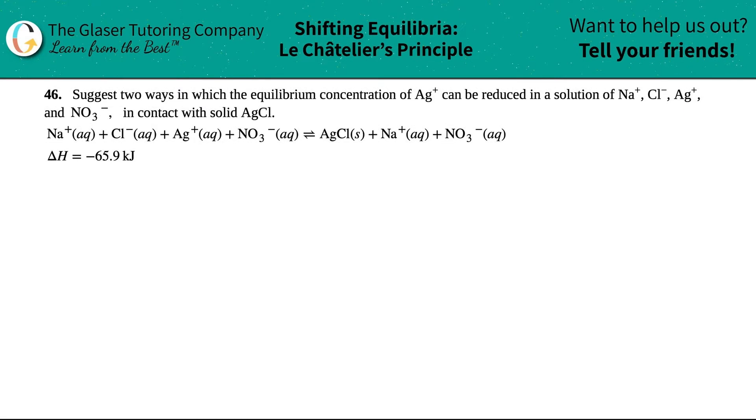Number 46. Suggest two ways in which the equilibrium concentration of Ag plus can be reduced in a solution of Na plus, Cl minus, Ag plus, and NO3 minus in contact with solid AgCl.